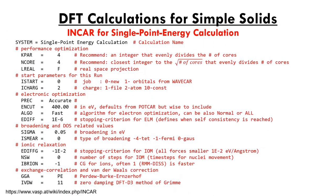The first file we look at is the INCAR. This file specifies most of the necessary parameters required for the calculation to run. There's no particular order that the parameters have to be listed, though I've grouped them here by their function. You can visit the VASP wiki to find detailed information on what each tag does, its default values, and how you might adjust it to improve your calculation's accuracy or performance. If a parameter isn't mentioned in the INCAR, VASP will use a default value. Adjusting the defaults can affect speed and accuracy, so it's recommended you do so with care.